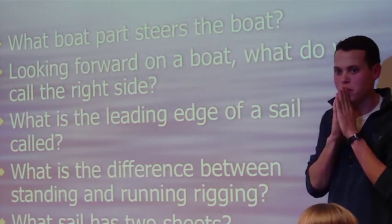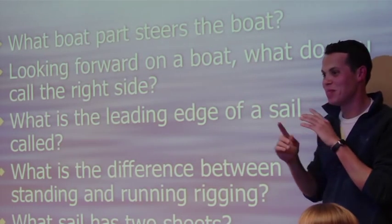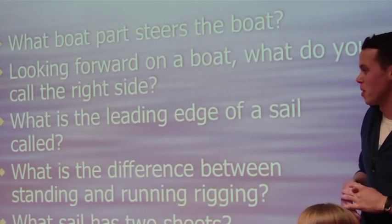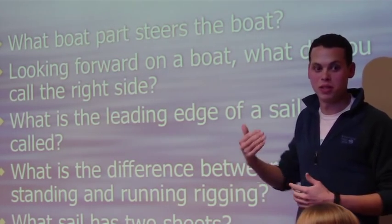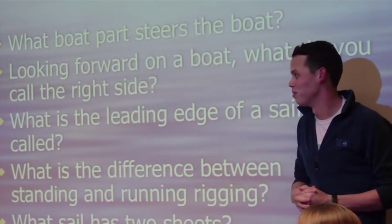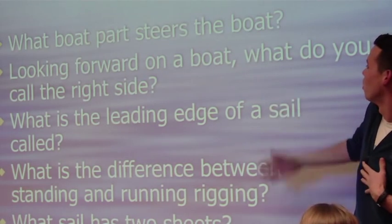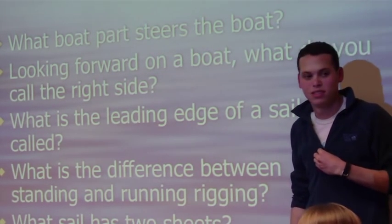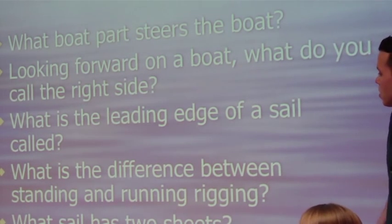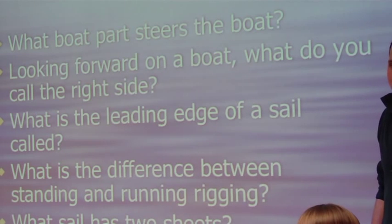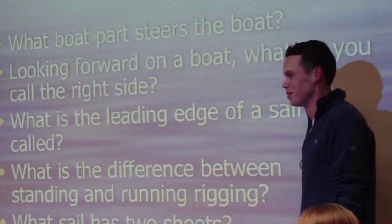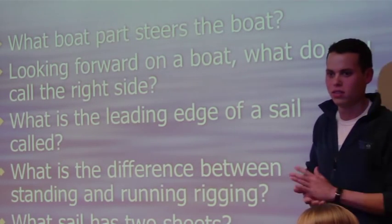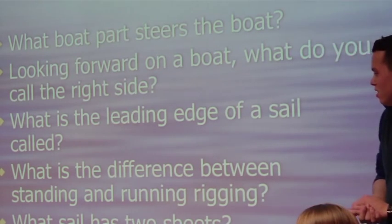So what part of the boat steers the boat? The tiller. No, the rudder. The rudder steers the boat, and the tiller steers the rudder. Always think about that, because is the tiller on the water? No. So is it able to deflect water from one side to the other? No. You're right. All right, so looking forward on the boat, what do you call the right side? Starboard. Starboard. Pretty easy. All right, and what is the leading edge of the sail called? Luff. Luff. Excellent. And so what is the difference between standing rigging and running rigging? Standing rigging doesn't move. You're right, standing doesn't move. All right, and what sail has two sheets? The jib. And what do we call these sheets? Lazy. Working and lazy. Yes, correct. Working and lazy. All right, go ahead, next slide.